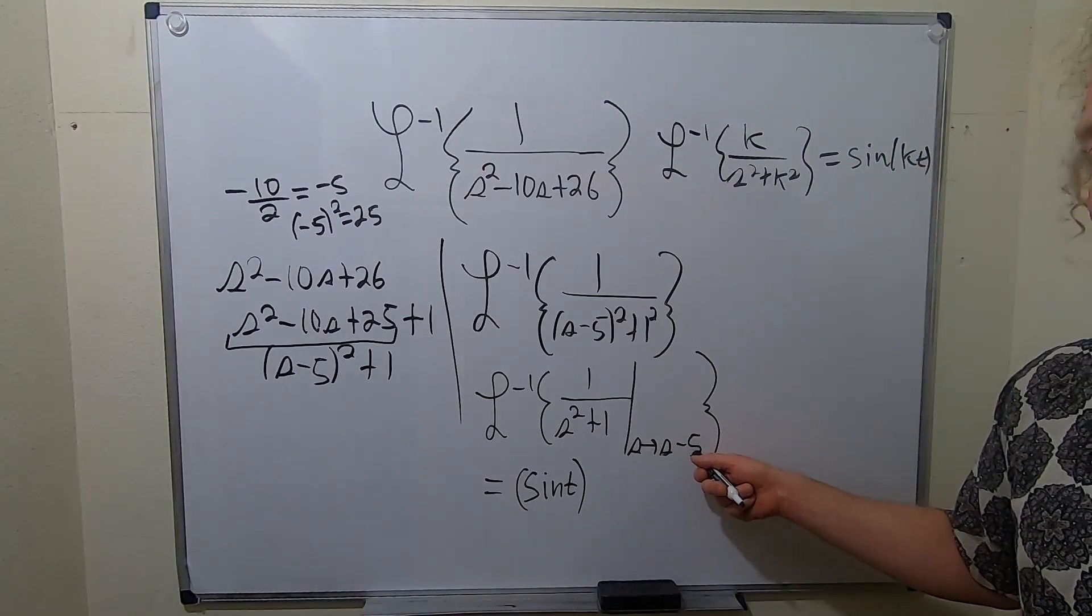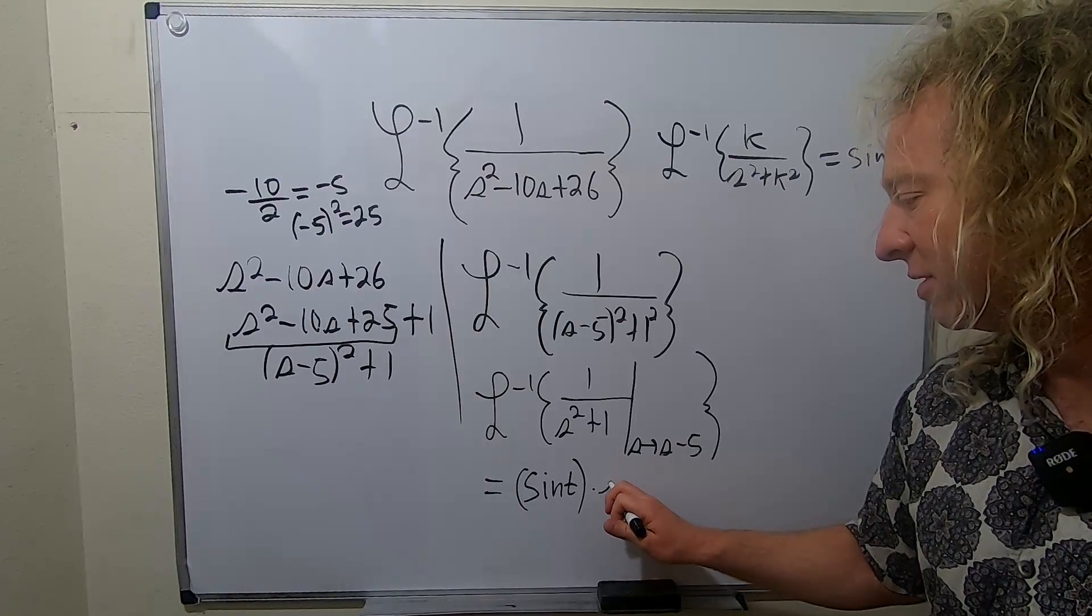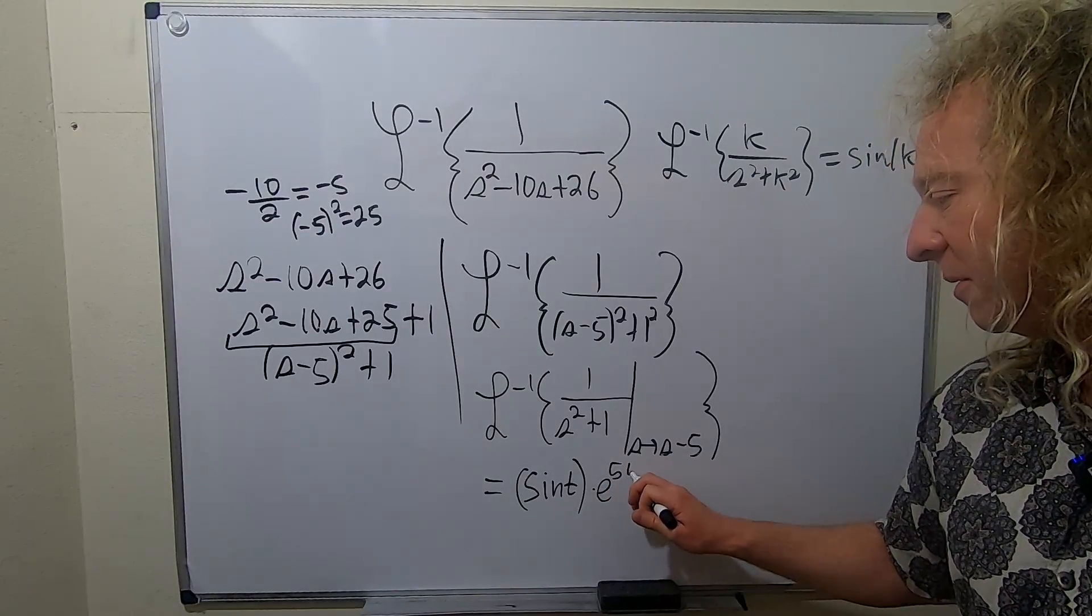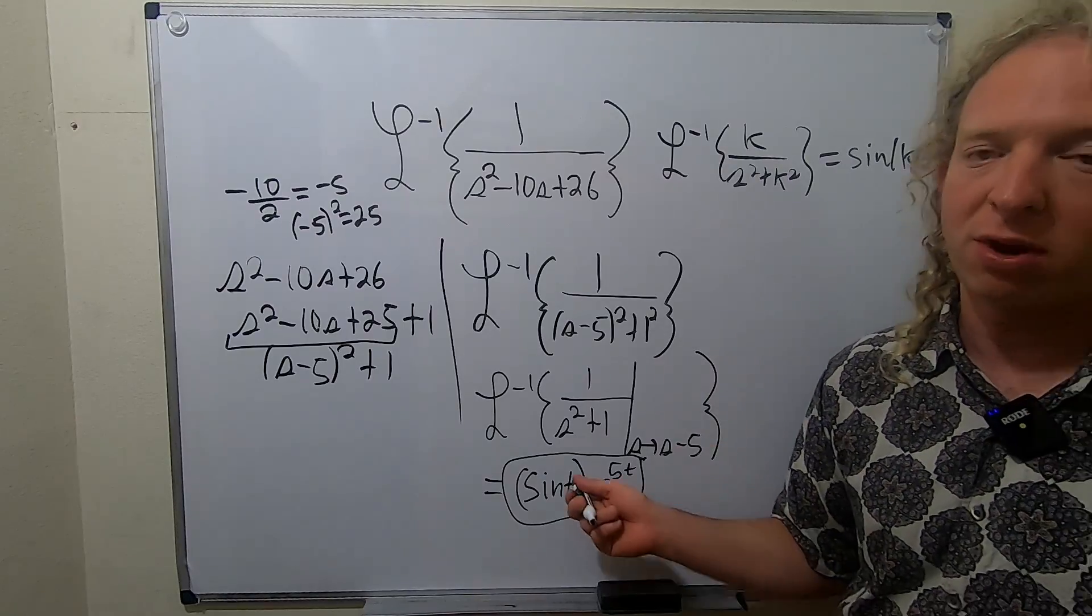So it's s minus a. That will give us e to the at. So s minus 5 is going to give us e to the 5t. And this, my friends, is the final answer to the problem.